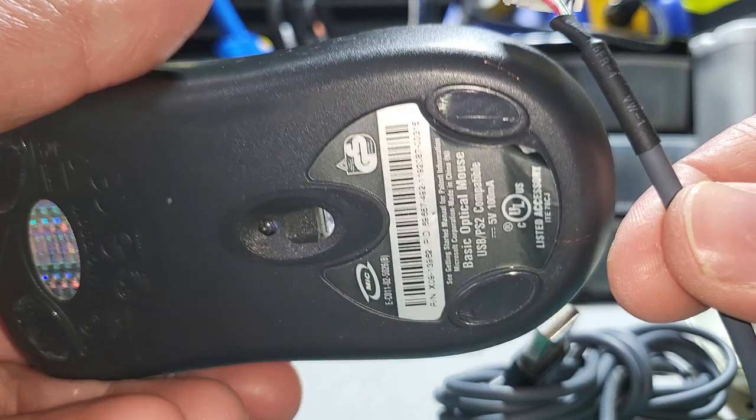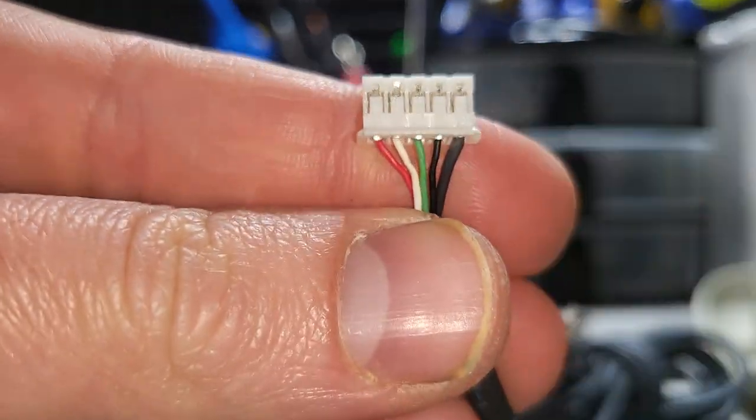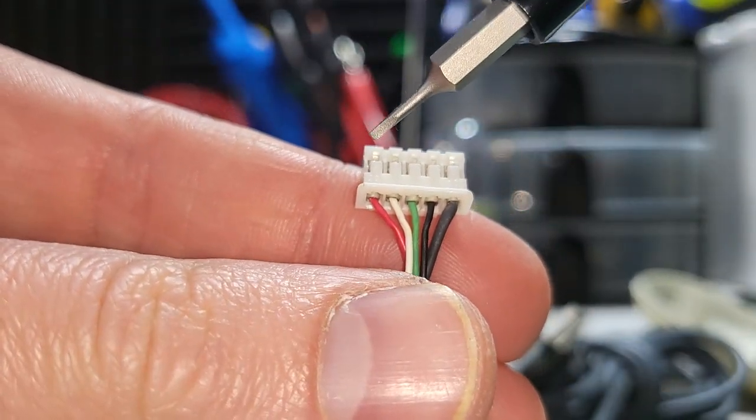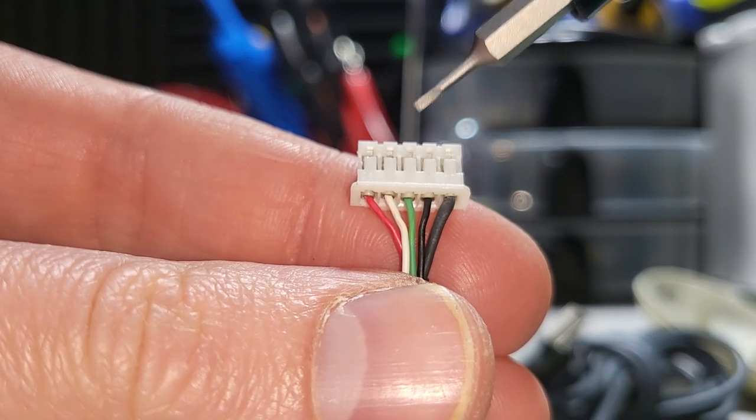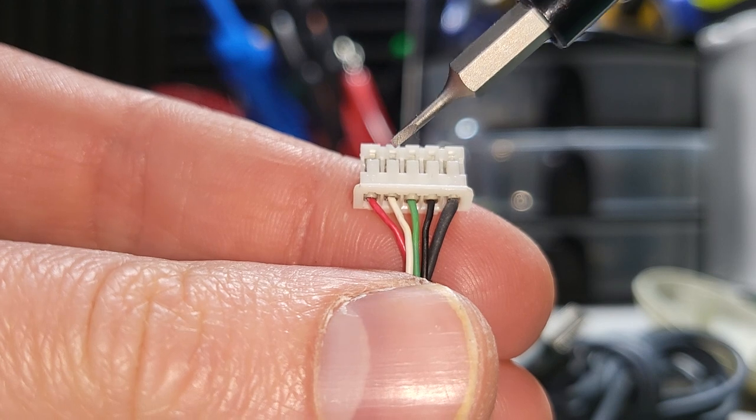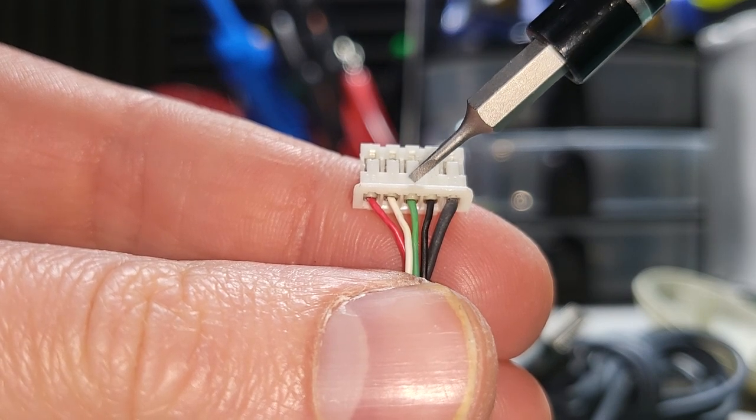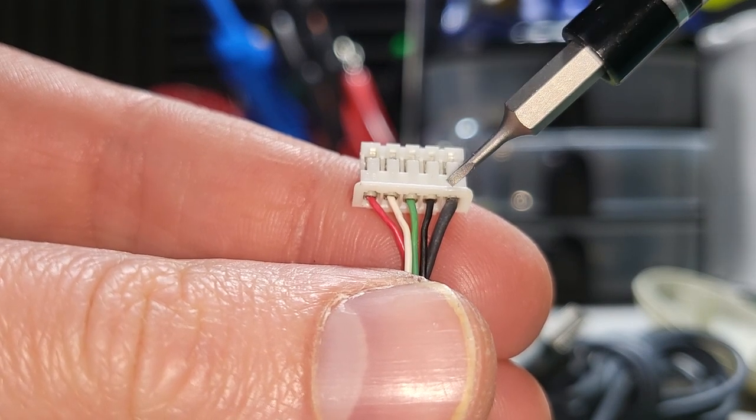Here's an old Microsoft mouse. The pinout for this one, reading from left to right with the cords coming down, is: 5 volts, data negative, data positive, ground, shield.